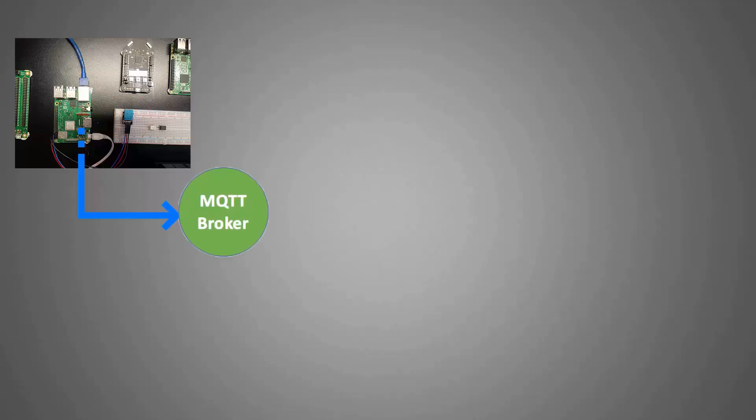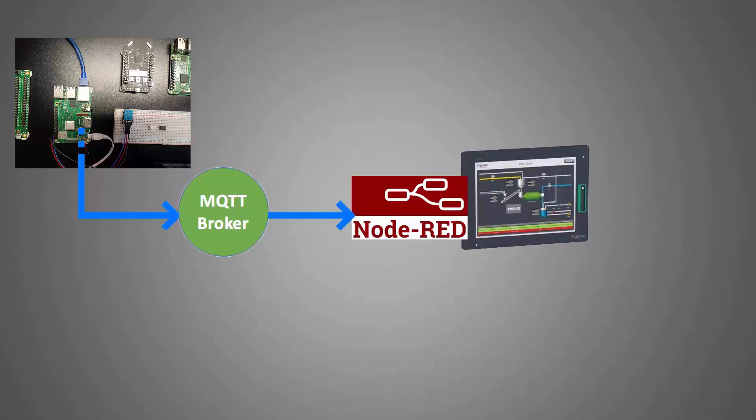But first, let's take a look at the architecture I'm using in this demo. I've got my demo board here with my Raspberry Pi that reads temperature and humidity sensor data from this DHT11 sensor and publishes that information to an MQTT broker. Then I've got my Node-RED running on my MyJelis industrial PC, subscribing to the sensor data from the MQTT broker and sending it to my Augmented Operator Advisor runtime engine, also running on the MyJelis PC box.